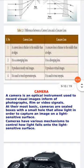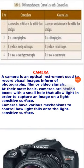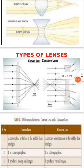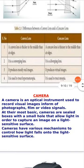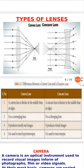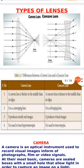In this table we have a distinction between the convex (converging) and concave (diverging) lenses. The first difference is that a convex lens is thicker in the middle than at the edges — you can see it thicker at the middle — while a concave lens is thinner in the middle than at the edges.